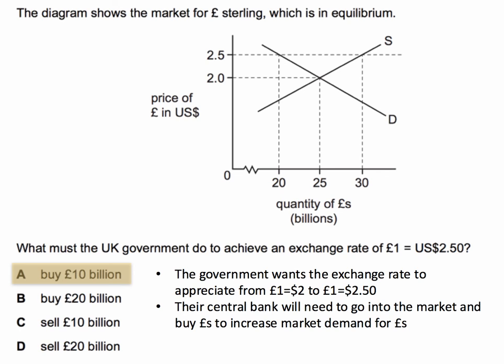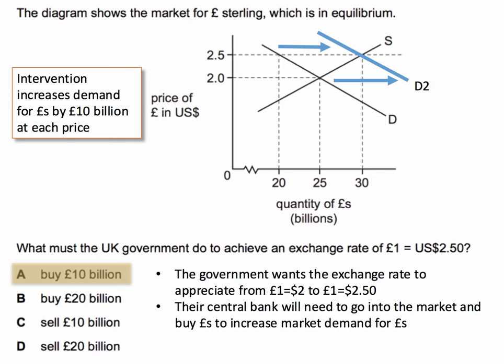The central bank — for example, the Bank of England — needs to go into the market and buy pounds to increase demand. What needs to happen is that the central bank increases the demand curve from D to D2 to reach the new equilibrium at two dollars fifty.